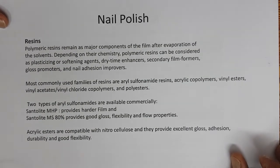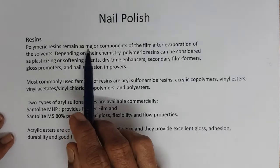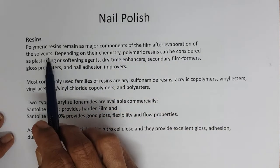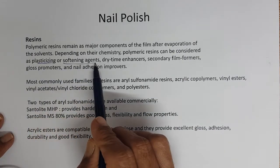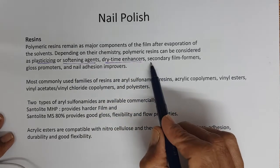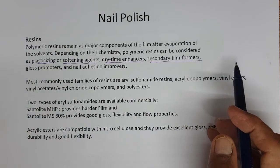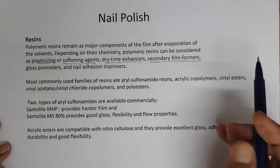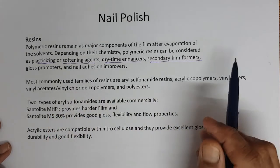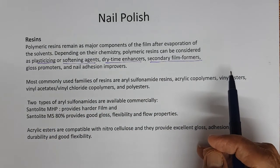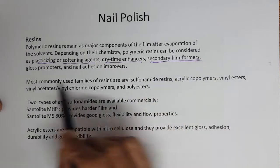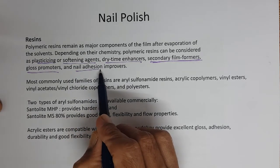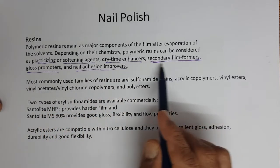Resins are a major component of the film after evaporation of solvents. Depending on their chemistry, polymeric resins can function as plasticizing or softening agents, dry time enhancers, secondary film formers — with nitrocellulose being the primary film former — gloss promoters, and nail adhesion improvers. Plasticity is important so that the film doesn't crack or chip out.